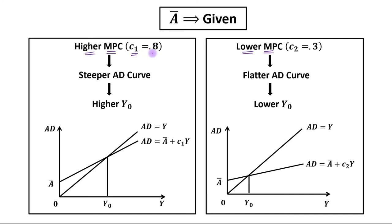In the case of higher MPC, let's assume C1 equals 0.8, and for lower MPC, C2 equals 0.3. With higher MPC there will be a steeper aggregate demand curve, because a higher fraction of increased income is spent on consumption. With lower MPC there will be a flatter aggregate demand curve.